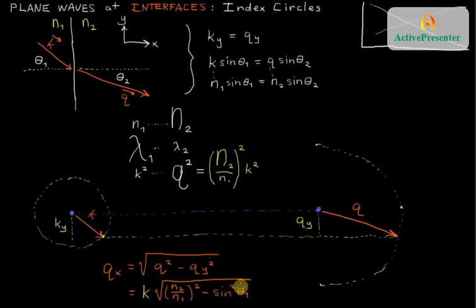Just as a teaser, it is possible then if you come in at a high enough incident angle and if n2 is less than n1, you can have a situation where sine squared theta 1 is actually greater than this and the qx quantity becomes the square root of a negative number, something imaginary, something we'll see in a future tutorial. Thank you.